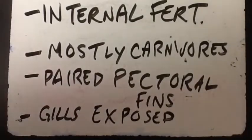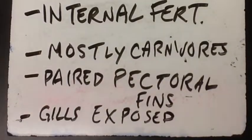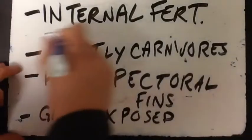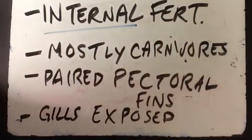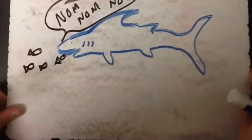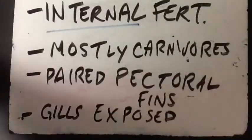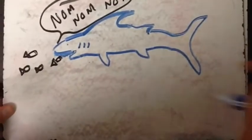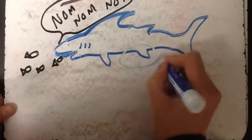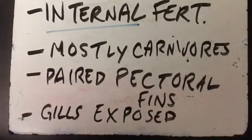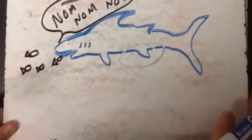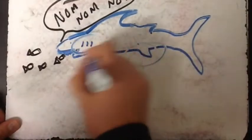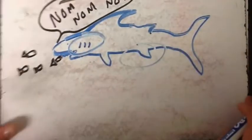The cartilaginous fish we have today are both predators and harmless mollusk eaters — so unless you're a mollusk. Some major characteristics of our Chondrichthyes are internal fertilization, being mostly carnivores, paired pectoral fins, and exposed gills, which you can see on the drawing here.